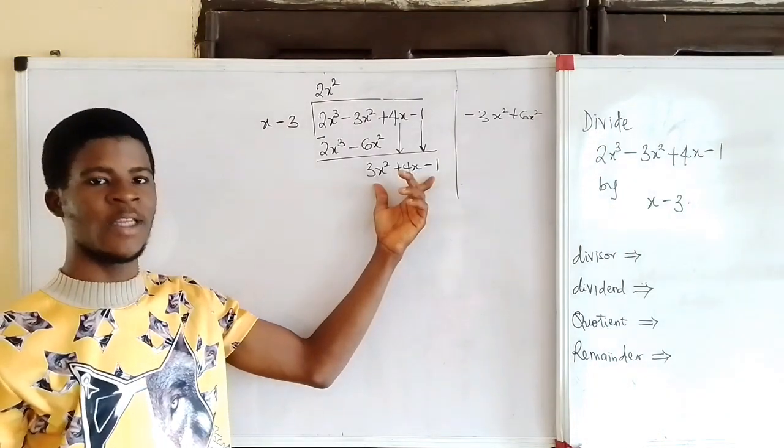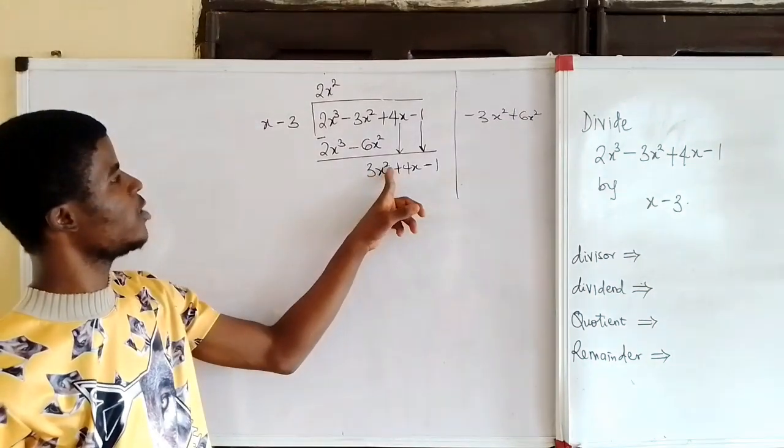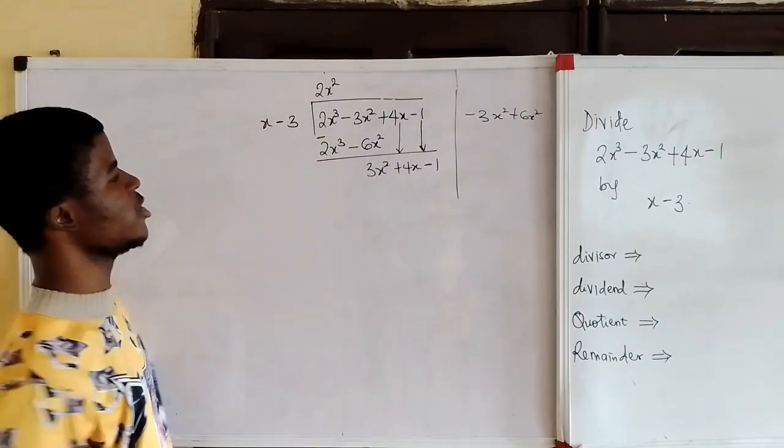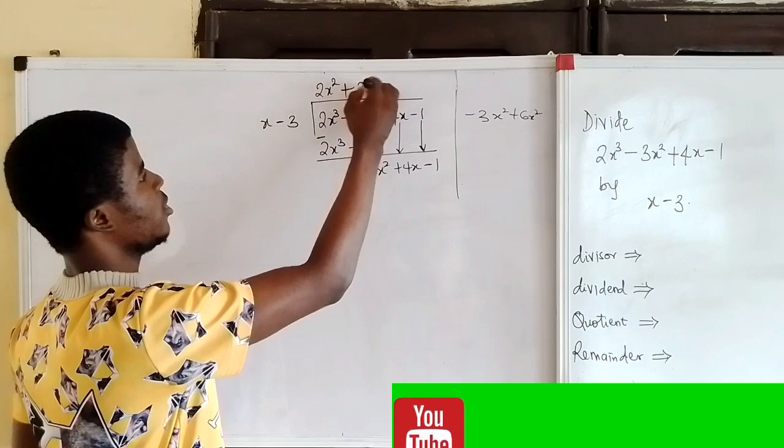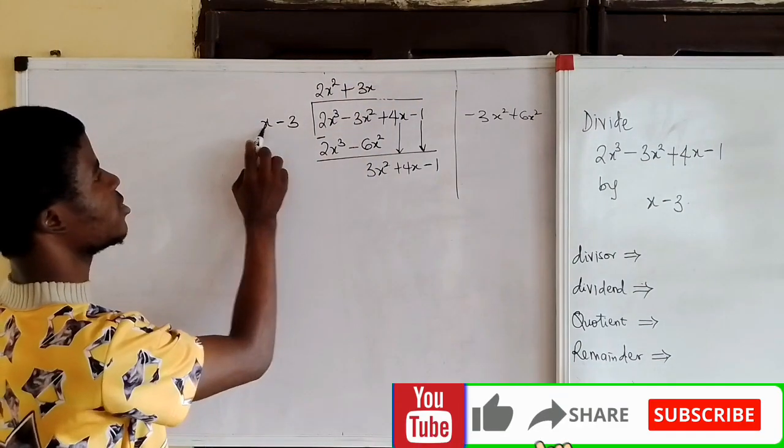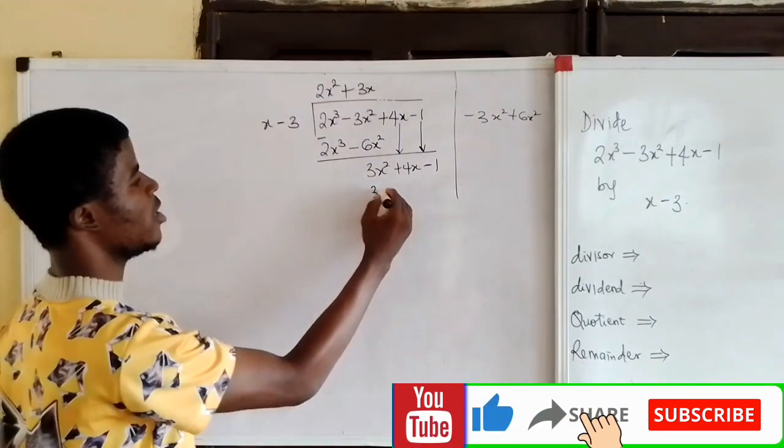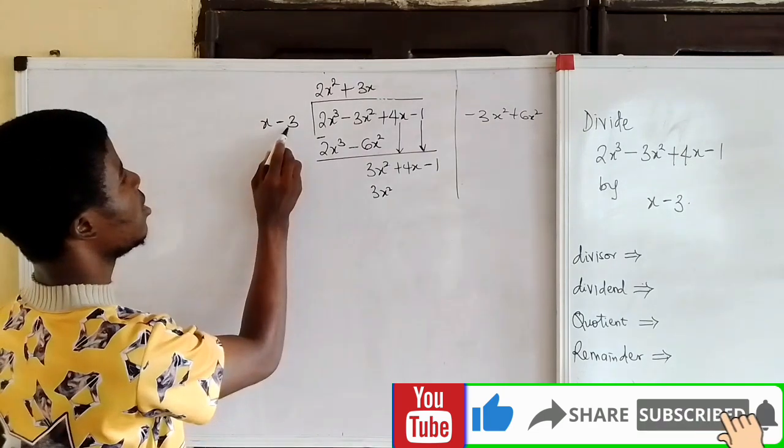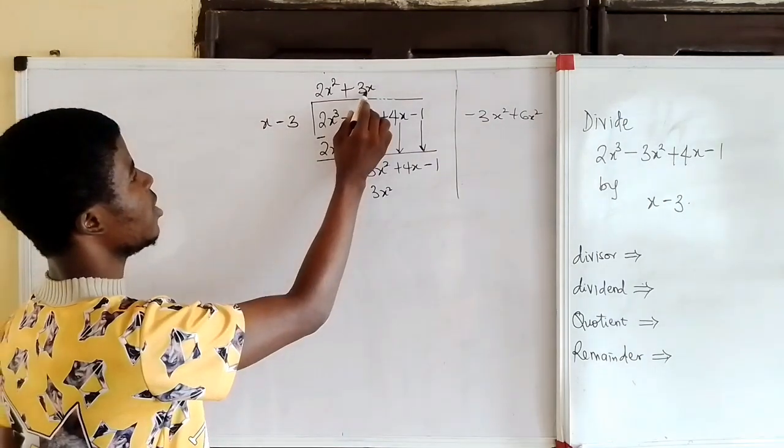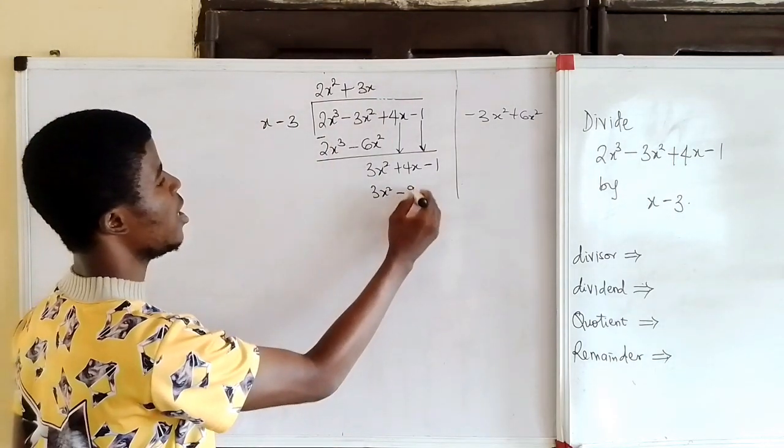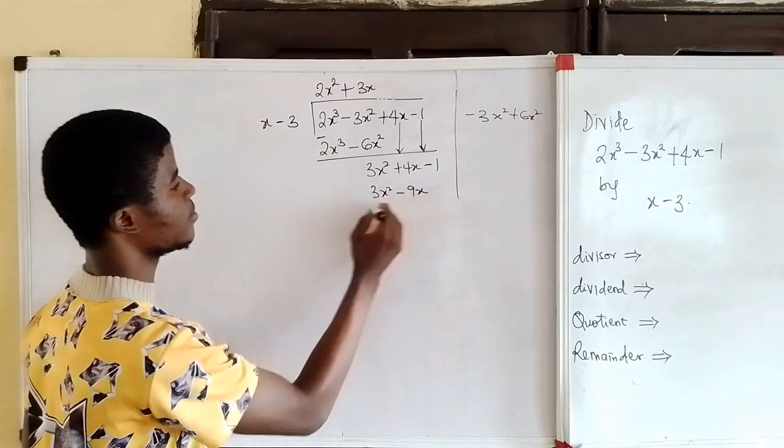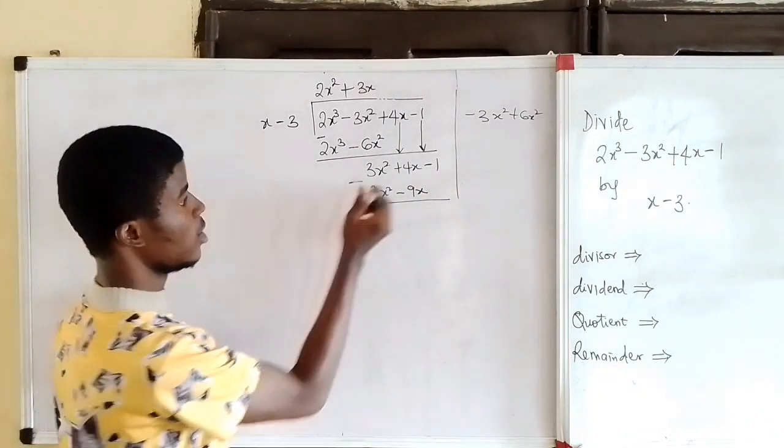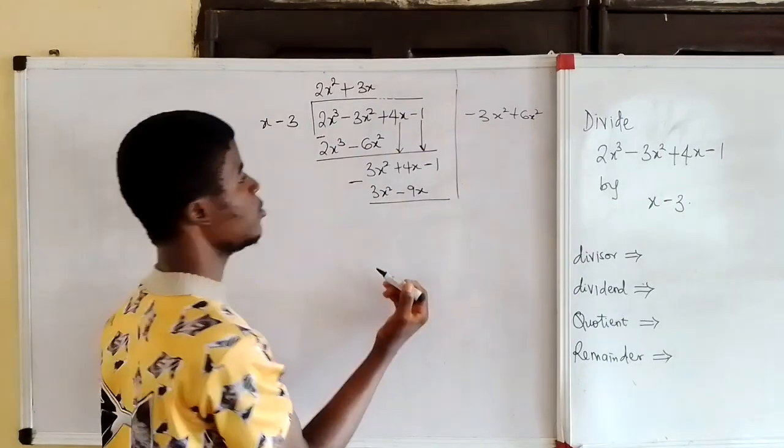So at this point we divide again. 3x squared divided by x is what? Plus 3x. x times 3x is 3x squared. Minus 3 times 3x is minus 9x. We subtract. 3x squared minus 3x squared is 0.